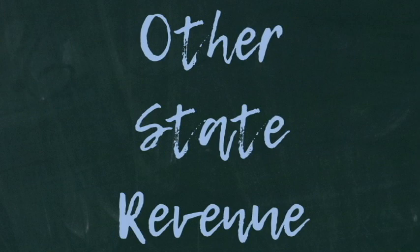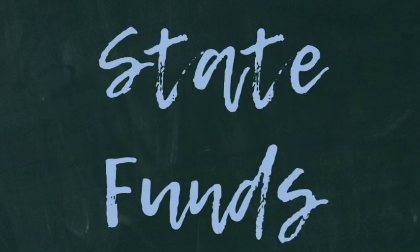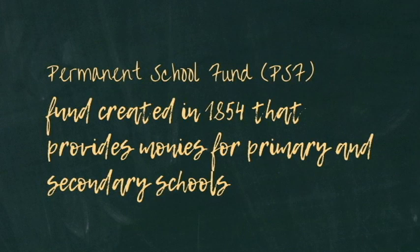Texas also generates revenue through licenses, fees, fines, sales of goods and services provided by the state, the lottery, land income, and a settlement with tobacco companies. Federal grants and matching funds — federal monies going to the state based on state spending for a program — have been kept low because Texas keeps spending on state-federal programs low. Money in Texas's budget comes from several sources and can go into 400 funds in the state treasury. Most revenue goes into the general revenue fund, and money can be spent directly from this fund or transferred to other special funds.